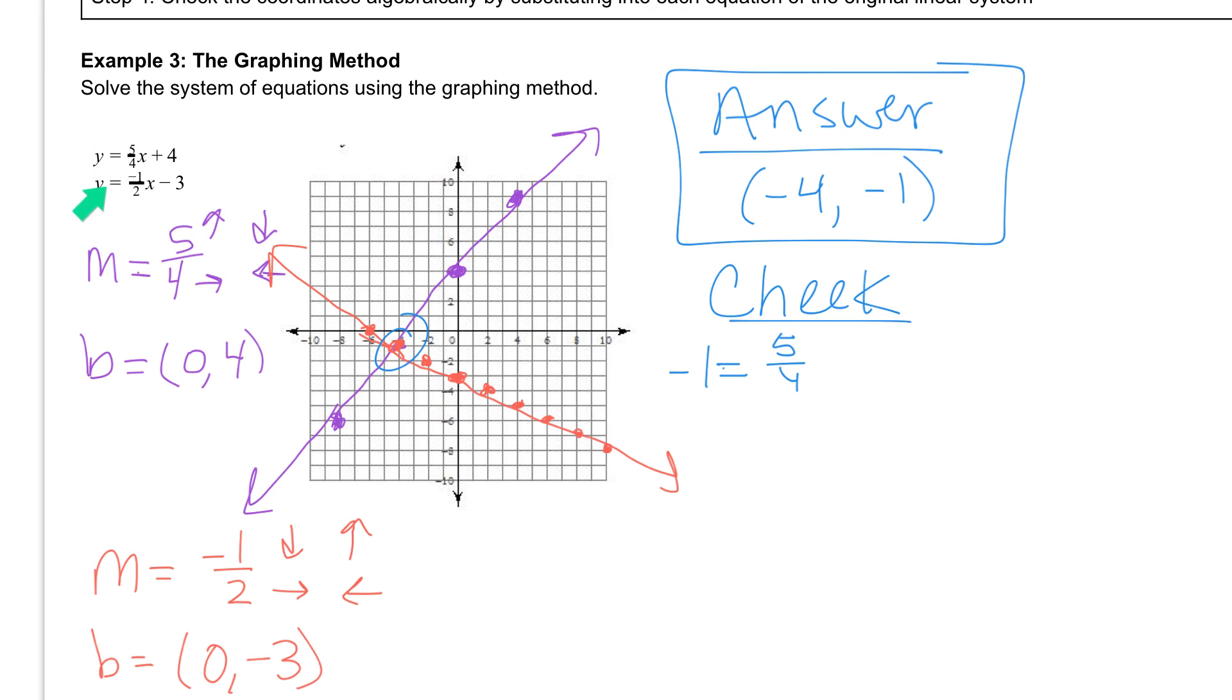So I'm just rewriting it. I've plugged negative 1 in for y. I have 5 over 4. Now I'm multiplying it by x. And x I have negative 4. And then plus 4. And if you need to, I would just plug this in your calculator. Take this right hand side, plug it in your calculator and make sure you get negative 1. You could also do it in your head. So 5 over 4 times negative 4 is going to give us negative 5 plus 4. And negative 5 plus 4 is negative 1. So since it's equal on both sides, we know that it works for the first equation.